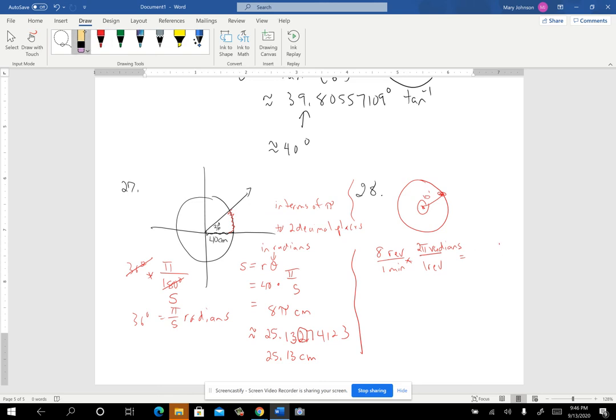So that would give me 16 pi radians. That would be 16 pi radians per minute.